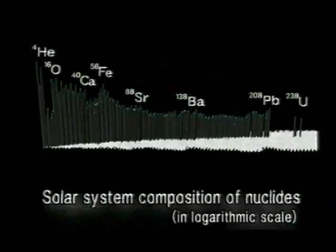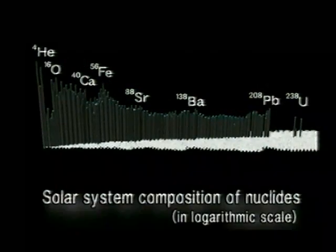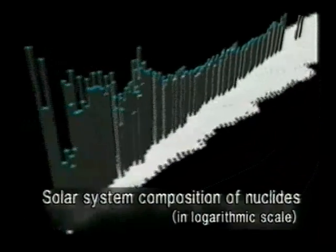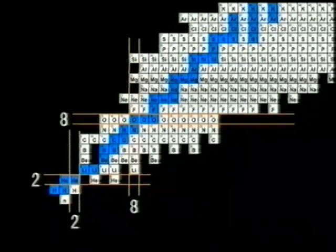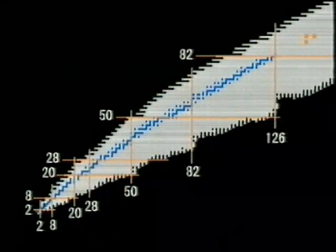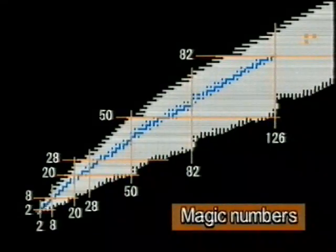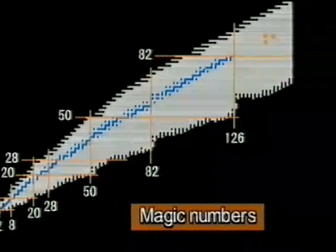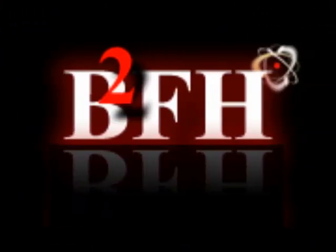If we examine the relative abundances of atomic nuclei currently in our solar system, we will see huge variations. There is a particularly large abundance of nuclei with protons or neutrons numbering 2, 8, 20, 28, 50, 82, and 126. These values indicate especially stable atomic nuclei and are called magic numbers.